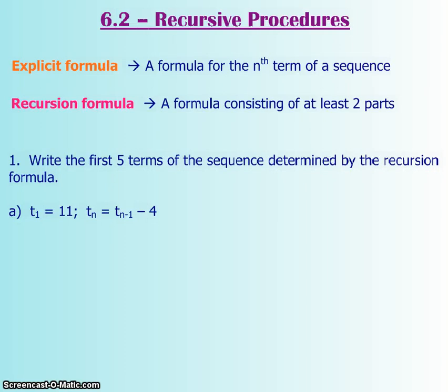The definition for an explicit formula was touched upon in the previous video, 6.1. An explicit formula is a relationship between your term number, which is your independent variable, and the term value, which is the dependent variable.